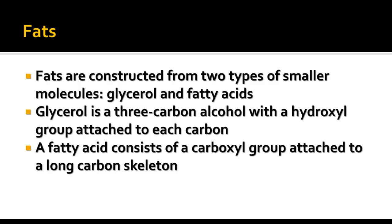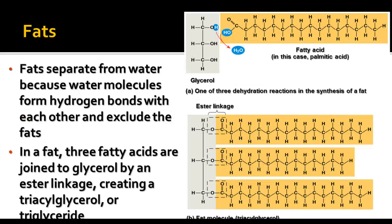Fats are made from two types of smaller molecules: glycerol, a three-carbon alcohol with a hydroxyl group attached to each carbon, and fatty acids, which are carboxyl groups attached to a long carbon skeleton with lots of carbon and hydrogen and very little oxygen. Fats don't mix with water because water molecules form hydrogen bonds with each other, excluding the fats. The carboxyl group undergoes dehydration with the glycerol molecule, and three fatty acid chains attach to one glycerol to produce a fat molecule.